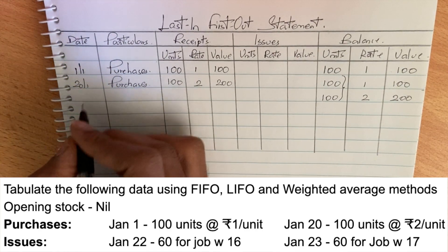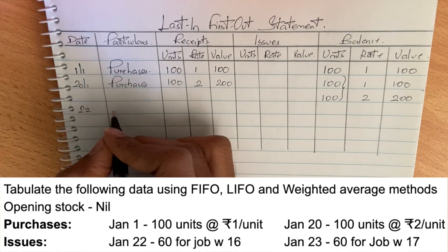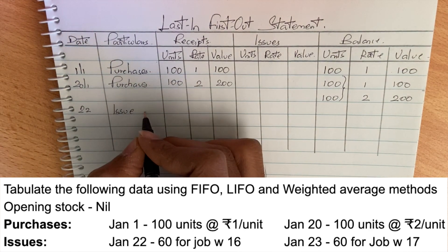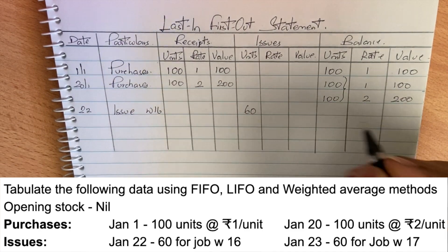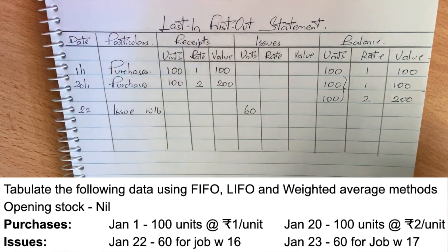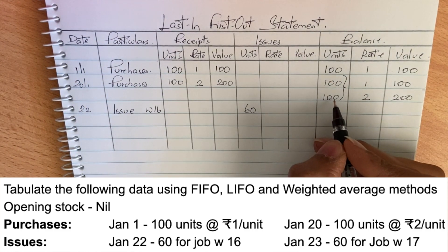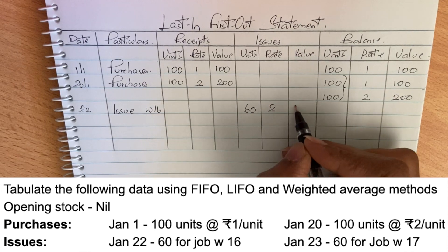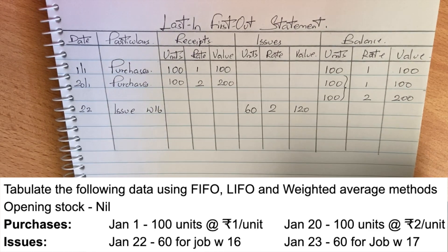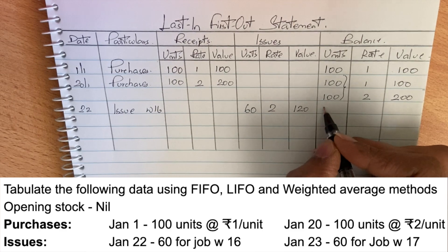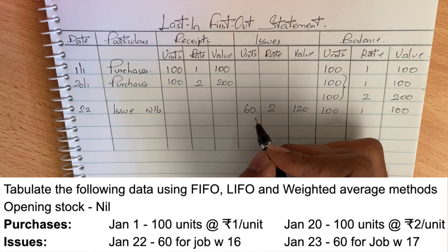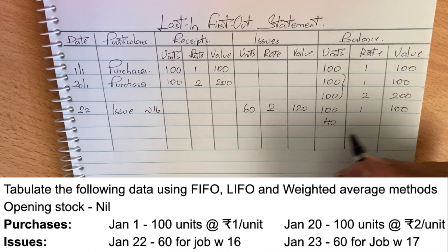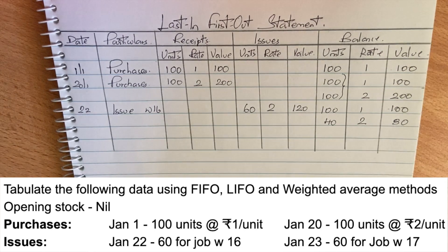On 22nd of January, issue to job 16 under LIFO method: the last purchased lot is issued first, so 60 units at the rate of 2 = 120. The balance from that second lot: 100 minus 60 = 40 units remaining at rate 2.